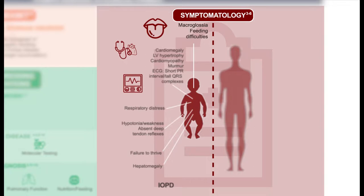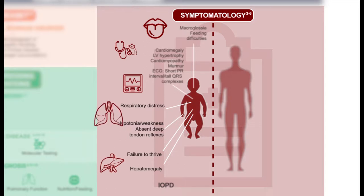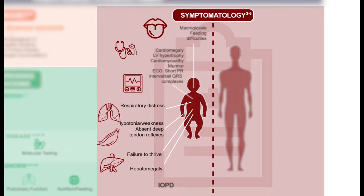These patients frequently have macroglossia, or a large tongue. They can have feeding difficulties, partly because of the macroglossia and obstruction, but also because of the muscle weakness they experience. There is frequently hepatomegaly, respiratory distress primarily because of the cardiac compromise, hypotonia and weakness, absent deep tendon reflexes, and because of the hypotonia and cardiac disease, frequently failure to thrive.